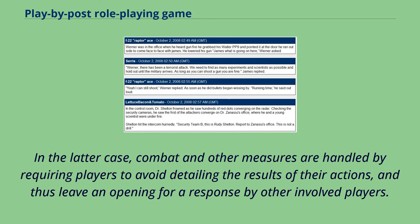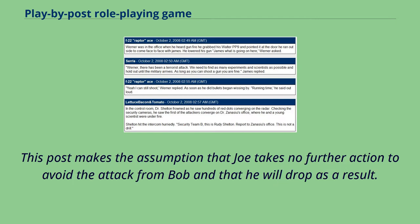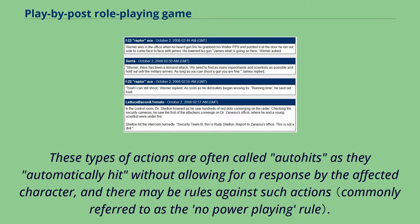In the latter case, combat and other measures are handled by requiring players to avoid detailing the results of their actions and thus leave an opening for a response by other involved players. Consider the following possible post from a character named Bob attacking Joe: "Bob punched Joe in the chest, knocking him over." This post makes the assumption that Joe takes no further action to avoid the attack from Bob and that he will drop as a result. These types of actions are often called auto-hits as they automatically hit without allowing for a response by the affected character, and there may be rules against such actions.